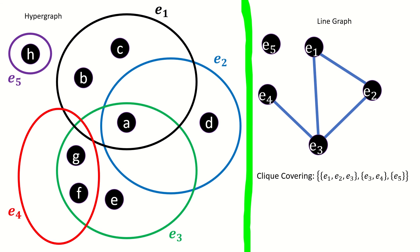We have three cliques in our clique covering. Notice that because our hypergraph has no empty edges, every one of the cliques in our clique covering corresponds to a star in the hypergraph. For each of our line graph cliques, there's at least one hypergraph vertex incident to all hypergraph edges in our clique. We're going to build the transversal in the hypergraph by choosing such a vertex for each clique in our clique covering.